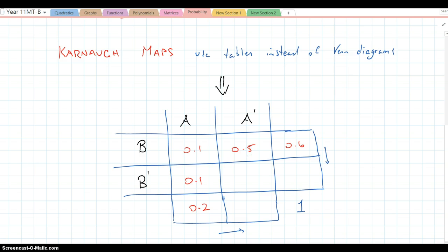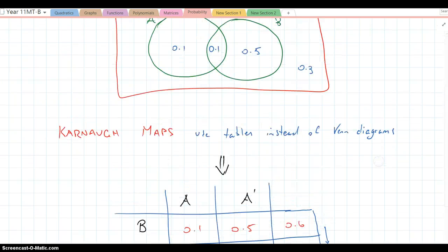Now we can fill out the rest of our box. 0.2 plus this has to equal 1, so that's 0.8. If that's 0.8, then this must be 0.3. And if that's 0.1 and 0.3, that has to be 0.4. And you can see 0.6 and 0.4 is 1, and 0.2 and 0.8 is 1. I went through that really fast. Hopefully that all made sense.